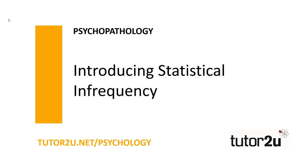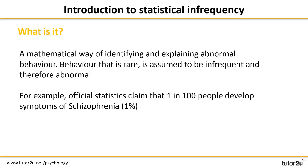So what do we mean by statistical infrequency? This definition of abnormality focuses on quantitative data and judging whether something is abnormal or not by how frequently we see it. It is a mathematical way of identifying and explaining abnormal behaviour, and any behaviour that is rare is assumed to be infrequent and therefore abnormal.